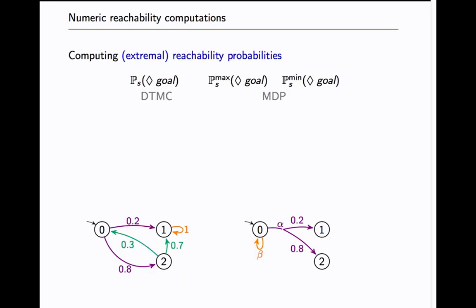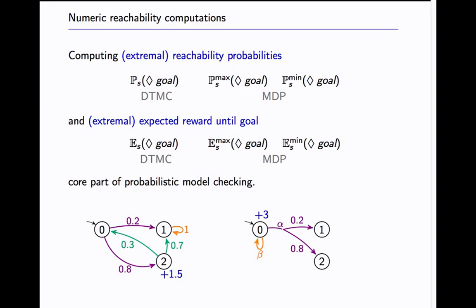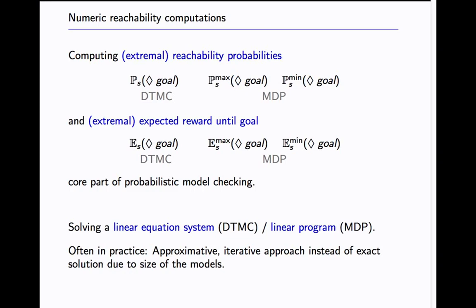We are interested in computing reachability probabilities in Markov chains so we have a probabilistic transition function and in MDPs where we have additionally non-deterministic choices. For MDPs we have to quantify over all the different resolutions of the non-deterministic choices and we are also going to see the computation of expected reward until reaching some goal. The computation amounts basically to solving a linear equation system for DTMCs and solving a linear program for MDPs and in practice because of the size of the models that are typically involved, approximative iterative approaches are used instead of computing exact solution.